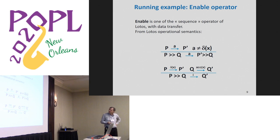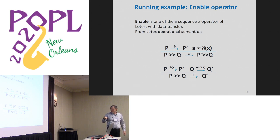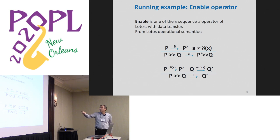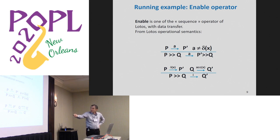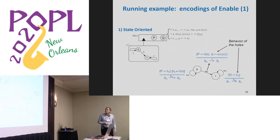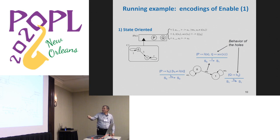I have a running example. Everyone knows LOTOS? The rough idea: it's a sequence operator — P enable Q — dealing with data transmission. P can do some action A; if it's not a delta (i.e., not a termination, a special action of LOTOS), the enable expression does the same A. But if P does a delta with some argument, then Q accepts that argument as input, and after that only Q works. That is the sequence operator of LOTOS. The PNET representing P enable Q and its open automaton semantics are shown here.